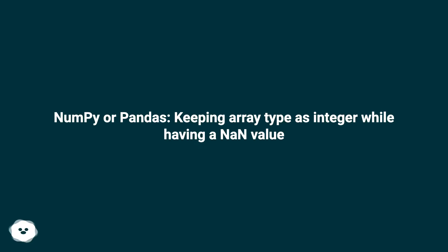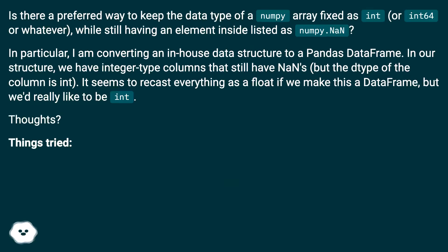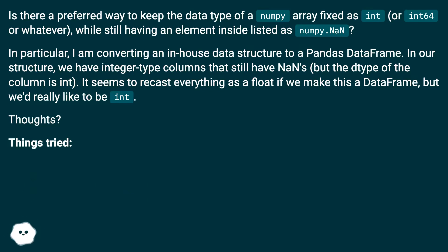NumPy or pandas: keeping array type as integer while having a NaN value. Is there a preferred way to keep the data type of a NumPy array fixed as int, or int64 or whatever, while still having an element inside listed as NumPy.NAN? In particular, I am converting an in-house data structure to a pandas data frame. In our structure, we have integer type columns that still have NANs, but the dtype of the column is int. It seems to recast everything as a float if we make this a data frame, but we'd really like it to be int.